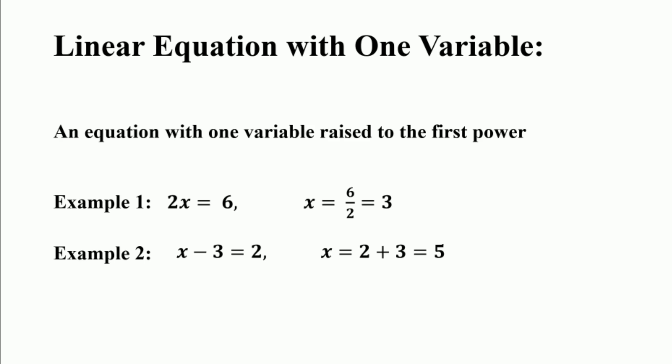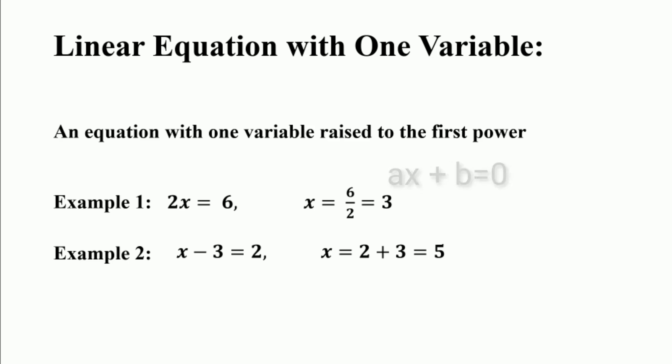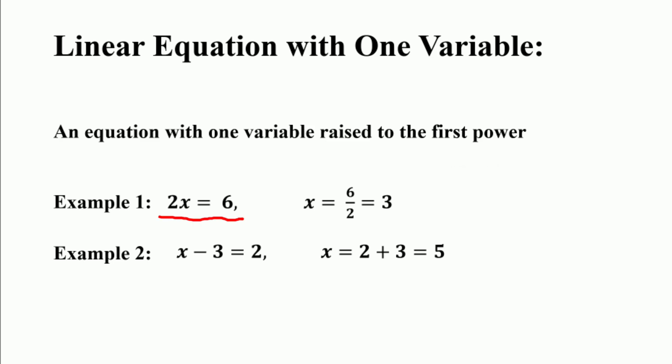A linear equation with 1 variable is an equation which has a maximum of 1 variable of order 1. It is of the form ax plus b is equal to 0, where x is the variable, a and b are integers, a is the coefficient of variable x, and it has only one solution. For example, 2x is equal to 6 and x minus 3 is equal to 2 — these are linear equations having a single variable.